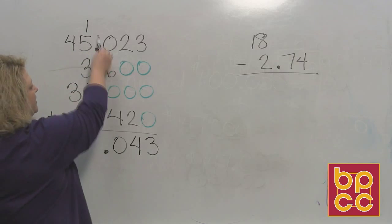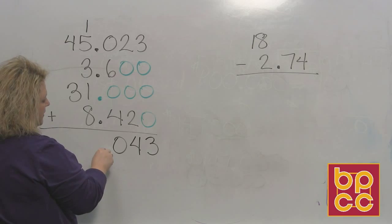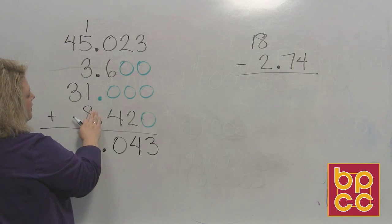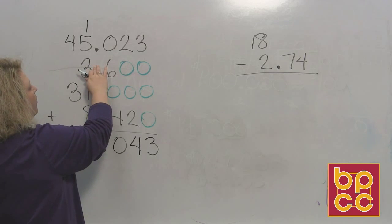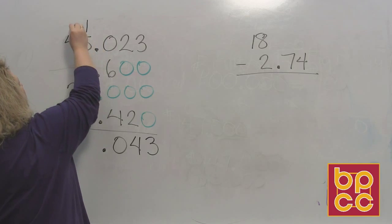Remember, when you do adding and subtracting, your decimals must line up. So bring that decimal down into your answer so that it's in the exact same spot as it is in all the rest of it. And then you add this eight plus one is nine. Nine plus three makes twelve. Twelve plus five is seventeen. Plus one makes eighteen.